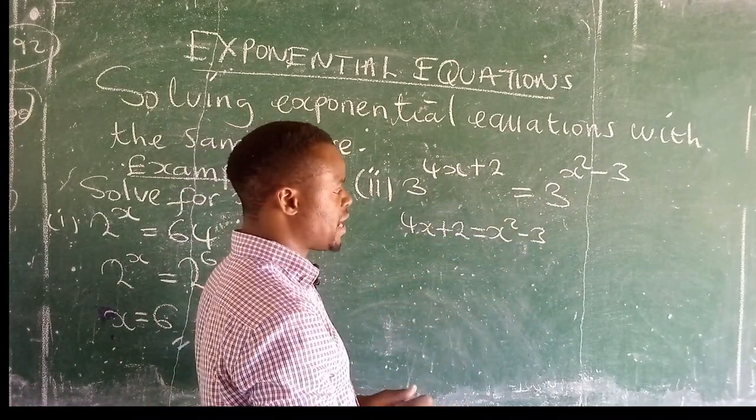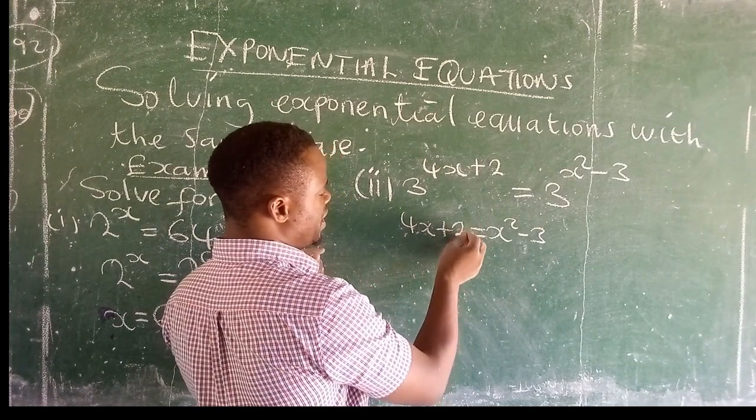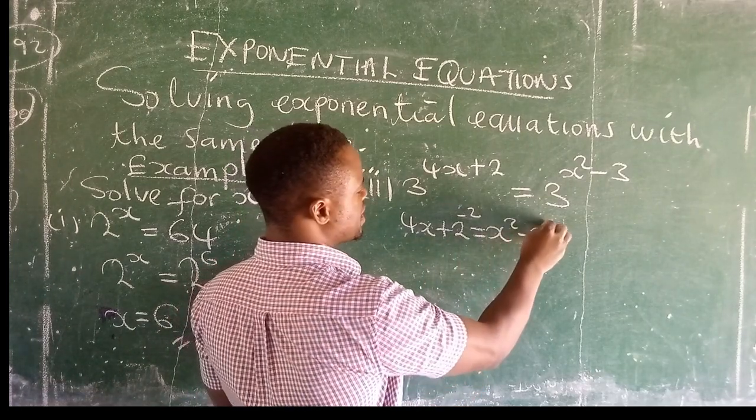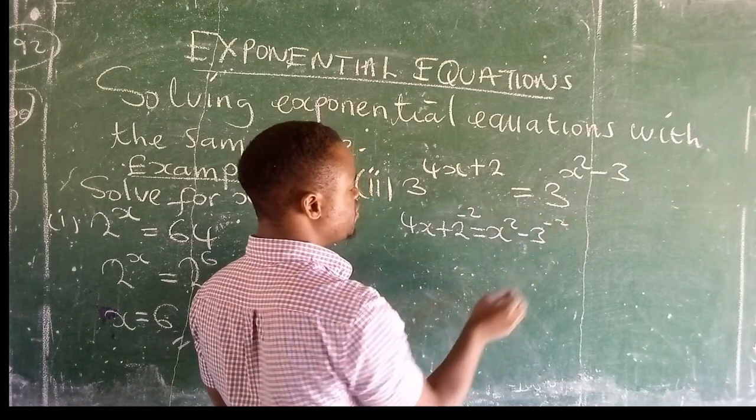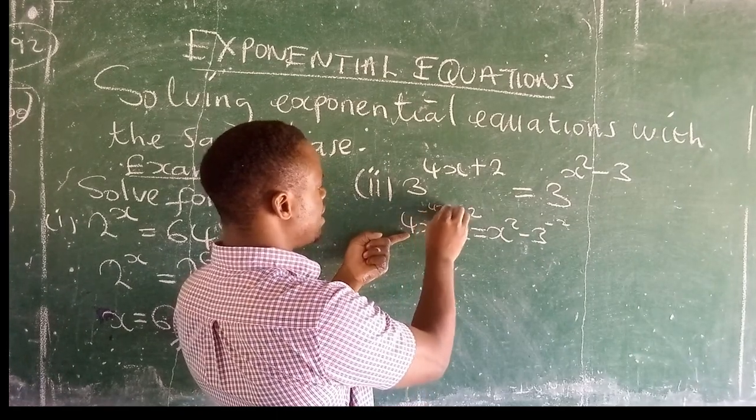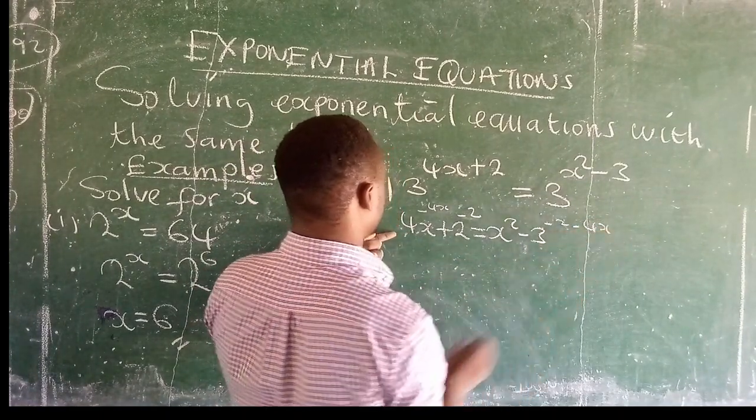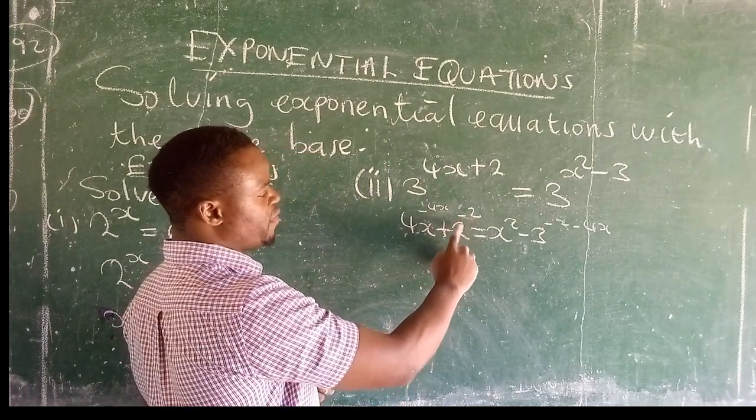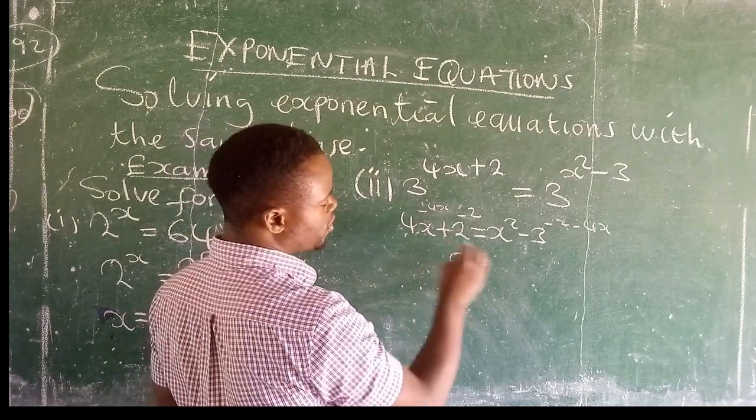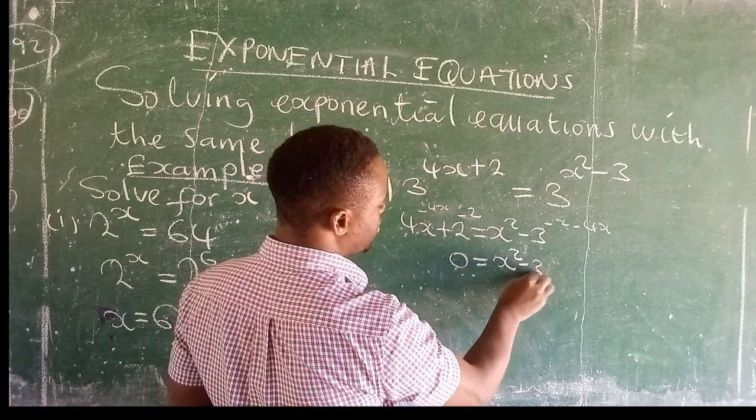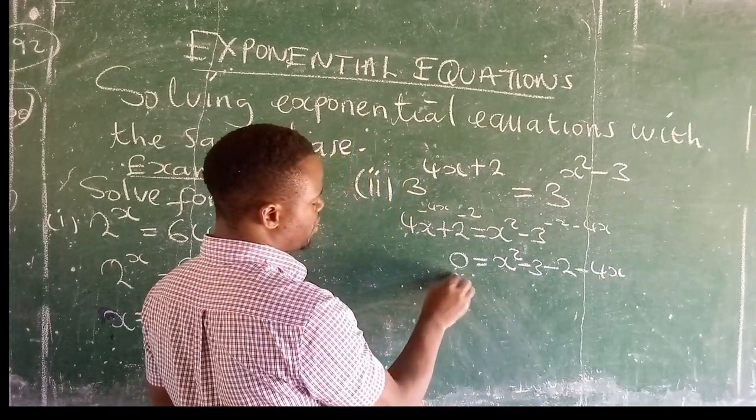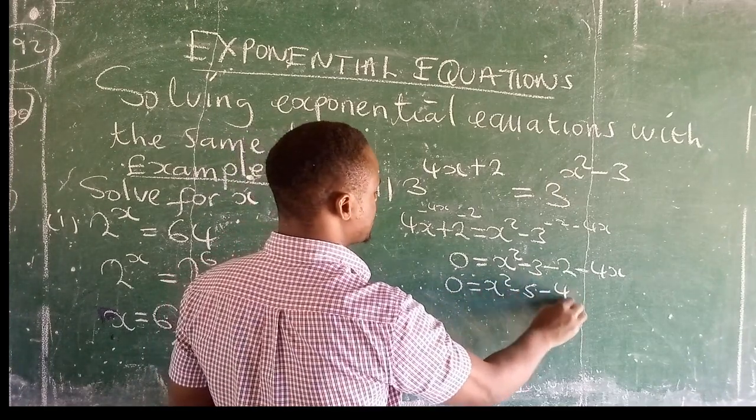We can shift all this to the other side. So what we're doing here is we add the additive inverse of positive 2, which is negative 2. When we do that, we do the same this side. Then this side, we have positive 4x, so we add negative 4x. And what we do this side is what we do this side, minus 4x. These are actually additive inverses. When you add positive 2 to negative 2, that gives you 0. This is equal to x squared minus 3 minus 2 minus 4x. So what we're going to have is 0 is equal to x squared minus 5 minus 4x.